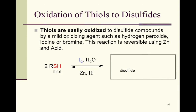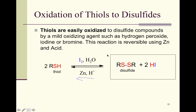Thiols can be easily oxidized to disulfide compounds using mild oxidizing agents such as hydrogen peroxide, iodine, or bromine. For example, using iodine, two thiols combine and lose 2 HI to form a disulfide (R–S–S–R). This reaction is reversible: zinc and acid (Zn/H⁺) reduce the disulfide back to two moles of thiol. Iodine above the arrow drives the forward reaction, while zinc and hydrogen are written below for the reverse.